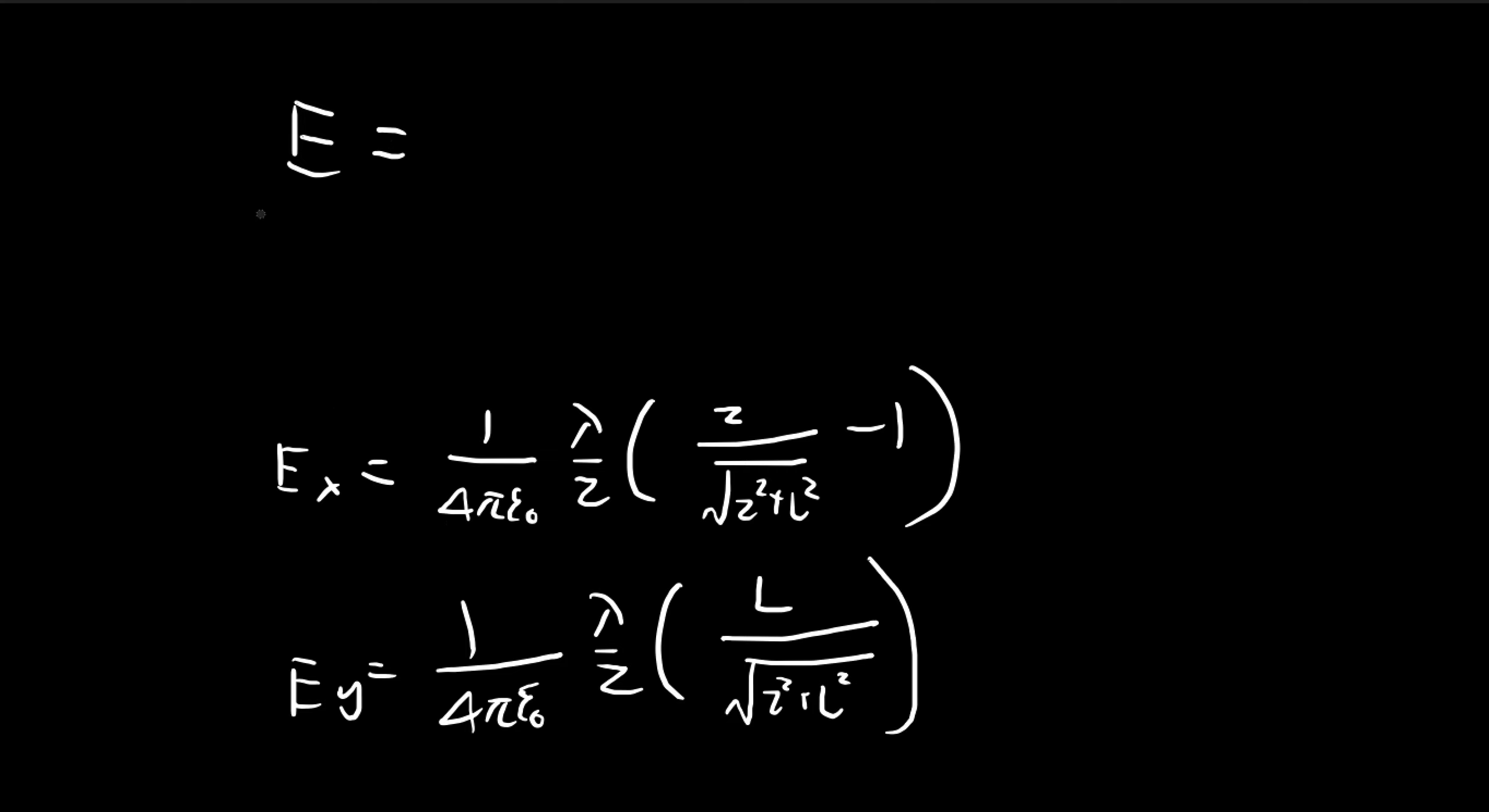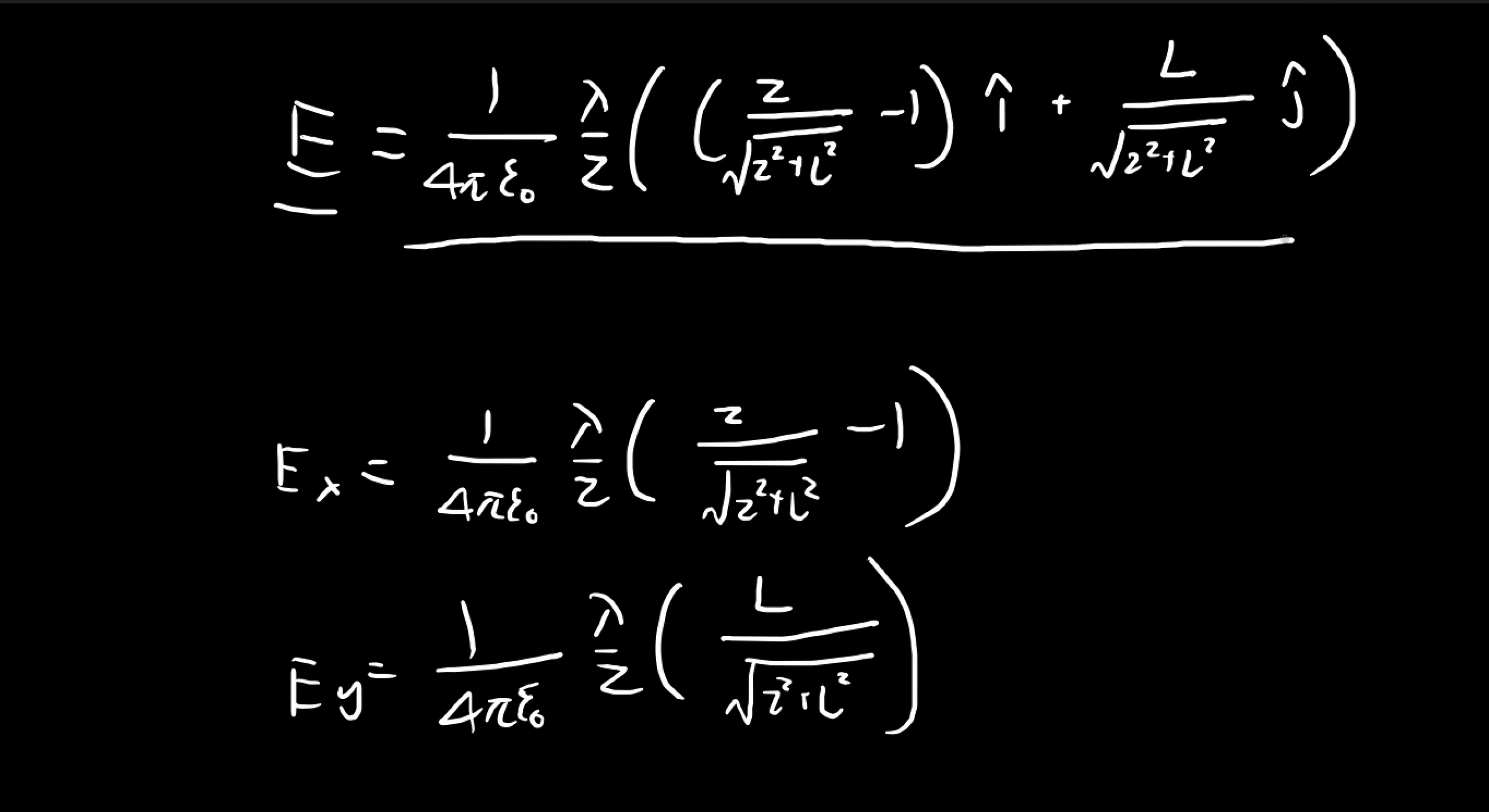So combining both of these expressions, we're going to arrive at a vector. So this is the entire electric field. And the way we combine these two components is to use the i and j vectors. So z squared plus L squared minus 1 points in the i direction, and then we have L divided by z squared plus L squared that points in the j direction. So this is the answer that we're looking for.